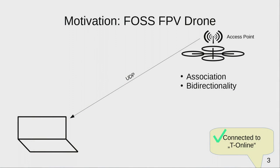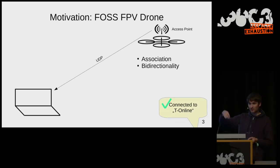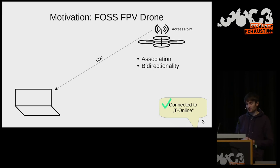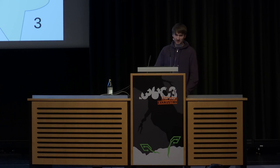Another disadvantage is bidirectionality. Ideally you want asymmetrical setups — for example, install a power amplifier on the drone side to spread the data further. But with standard Wi-Fi you'd need the same power transmitter also on the ground station, which is pretty pointless. Bidirectionality is a real problem.